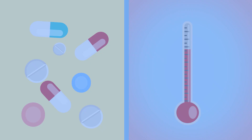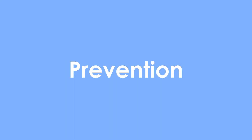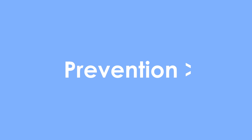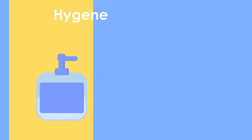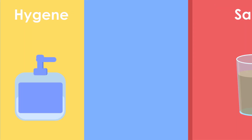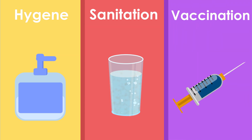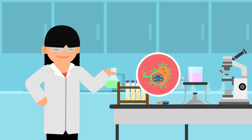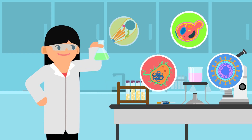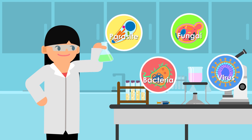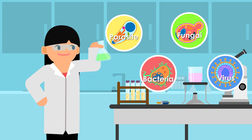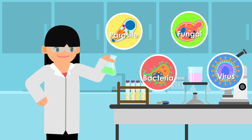Bacteria and viruses share one thing in common: prevention is always better than cure. Both can be prevented through personal hygiene, water and food sanitation, and vaccinations. Bacteria and viruses are just two of many types of pathogens. Knowing the enemy is half the battle, which is why scientists work hard to learn about them.